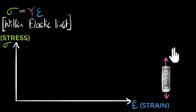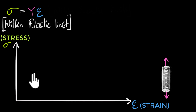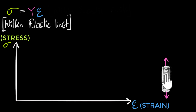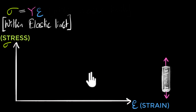After that, we increase our pull, the material will strain more, and we repeat the experiment over and over again, and we would have plotted this entire graph. Today we have machines to do that for us. And if we do all of this, the graph that comes out for steel would look somewhat like this.